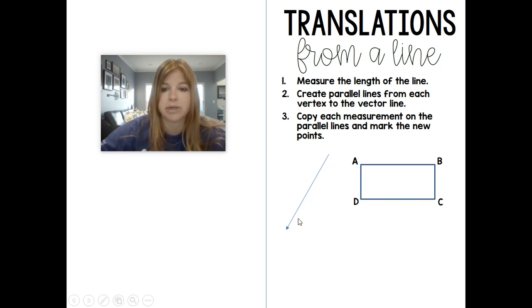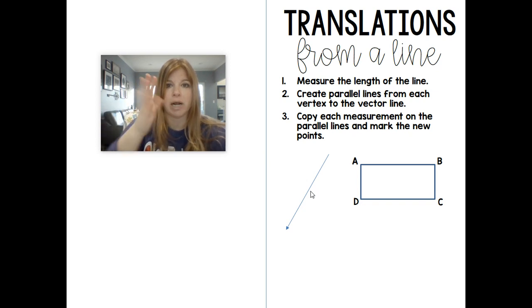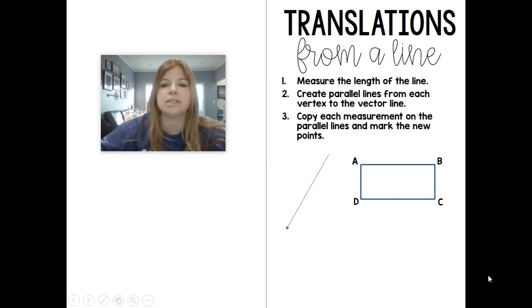First of all, it tells you the exact direction we want to translate this figure. Remember, translation just means to slide. We're not rotating, we're not reflecting, we're just simply sliding. So this line tells us exactly what direction we want to slide it in, but then also the length of how long we should translate it. So it tells us two things: the direction and how long the translation should be.